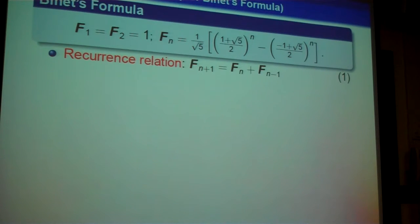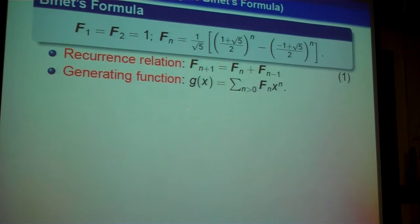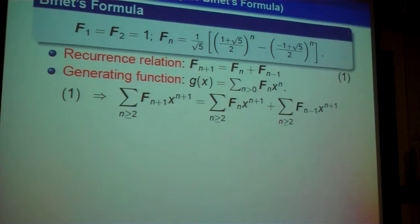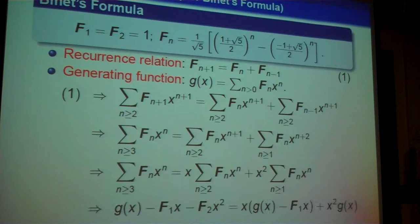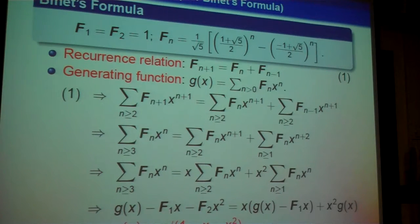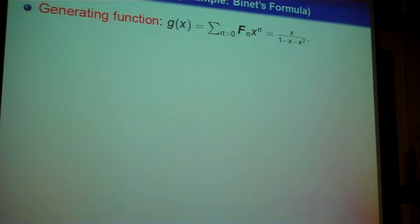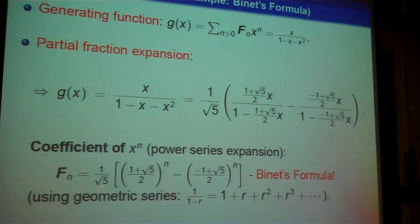Here is Binet's formula — let me quickly review its proof, one of my favorite proofs in mathematics. Write down the generating function G(x) = sum F_n x^n. Use the Fibonacci recurrence to replace F_{n+1}, do the algebra, and notice that the expression involves G(x) minus its first terms. Since F_0 = 0, you can solve for G(x) = x / (1 - x - x^2). Then do a partial fraction expansion, factor the denominator, expand using the geometric series formula, and you get Binet's formula.